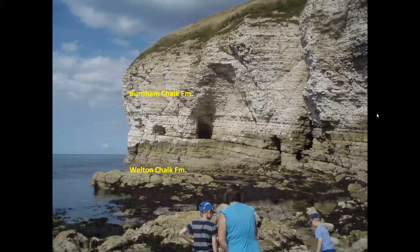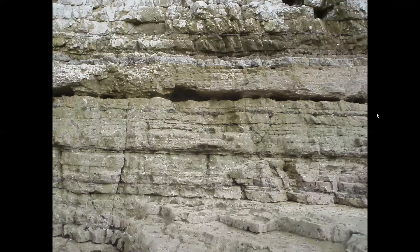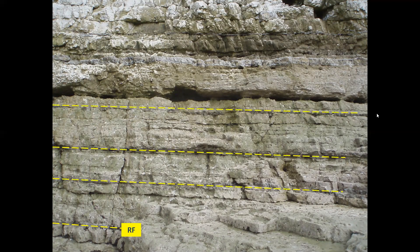Below East Cheek, the chalk beds dip inland and the results of differential weathering and erosion emphasise the major marker beds: the Ravendale flint, the North Ormsby Marl — which floors a line of caves — and the Lydborough flint. A closer look at the beds in the circled area enables a detailed examination of the lowest beds of the Burnham chalk. The Ravendale flint is at the base of the section and is succeeded by three lines of flint: triple tabulars 1, 2, and 3.